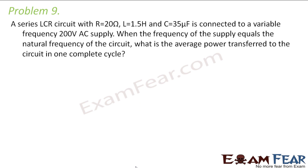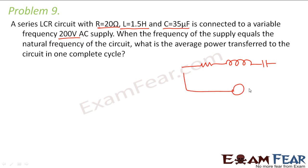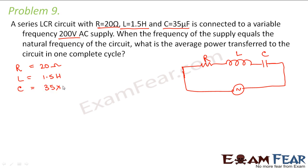So let us look at the first problem. It says that a series LCR circuit with resistance 20 ohms, inductance 1.5 henry, and capacitance 35 microfarads — that is 35 into 10 to the power minus 6 farads — is connected to a variable frequency 200 volt AC supply.